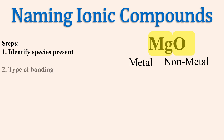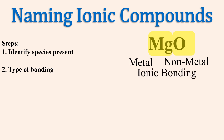Next, identify the type of bonding. Bonding between metals and nonmetals is called ionic bonding, or bonding between charged particles.